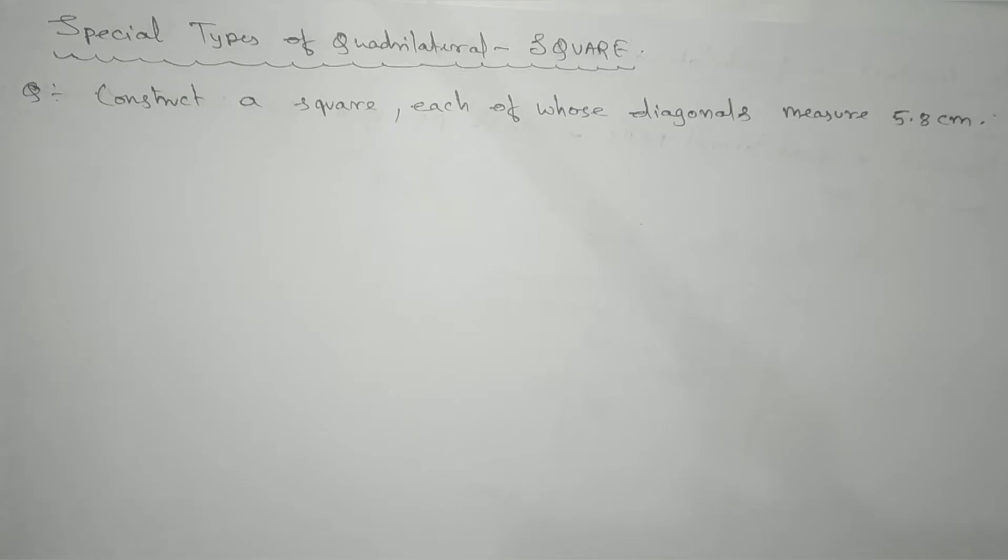Namaste students. Here we have a special type of quadrilateral, that is a square. The problem is to construct a square, each of whose diagonals measures 5.8 centimeters. Whenever you get a special type of quadrilateral construction, you need to use the properties of that shape.